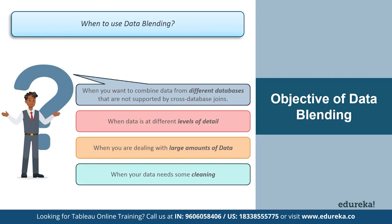Next is when you have data at different levels of detail. Sometimes one data set captures data using greater or lesser granularity than the other. For example, suppose you are analyzing transactional data and quota data. Your transactional data might capture all transactions; however, quota data might aggregate transactions at a quarter level. Because the transactional values are captured at a different level of detail in each data set, you should use data blending to combine the data.